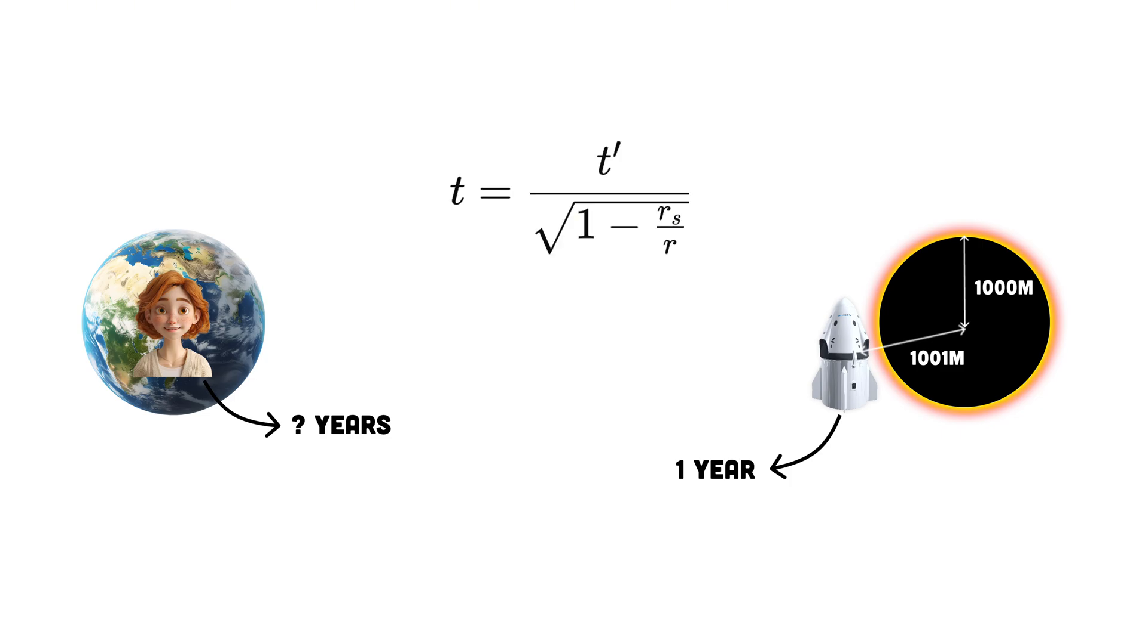To find the time that passed for Alice, we rearranged the formula. Solve for T, we have approximately 31.62 years would pass for Alice on Earth while Bob, near the black hole, experiences one year.